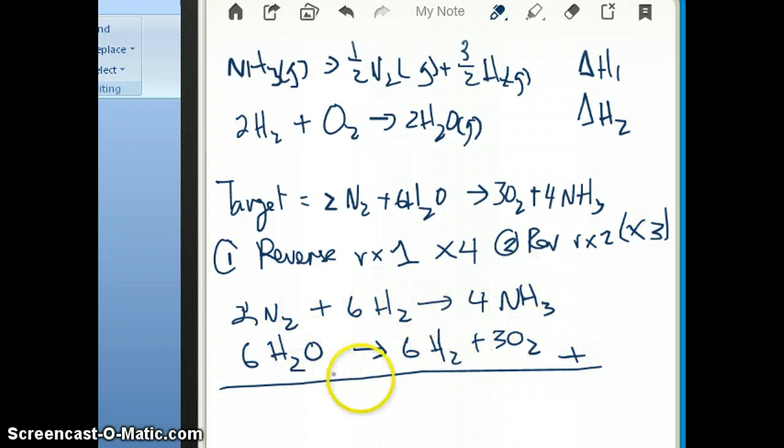And what I want to do before I do any kind of delta H calculation is I want to make sure that I actually get what I'm looking for before you start trying to multiply the delta H values. Because sometimes you might not get what you're looking for, in which case you need to rethink your strategy a little bit. But in this case, if you add everything together, you notice that the 2N2 is going to be here. The H2O is also going to be here. And then you have 6H2, but you also have that 6H2 appearing on this side, on the product side.